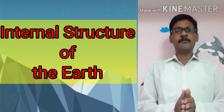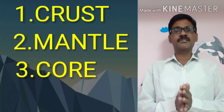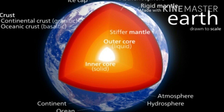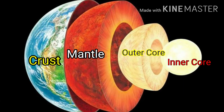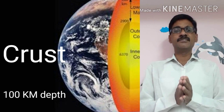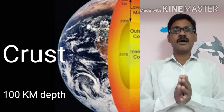The earth is made up of three layers. The first one is the earth crust, the second is the mantle, and the third is the core. The earth crust is what you are living on. It is composed of different types of rocks and its thickness is 100 kilometers.